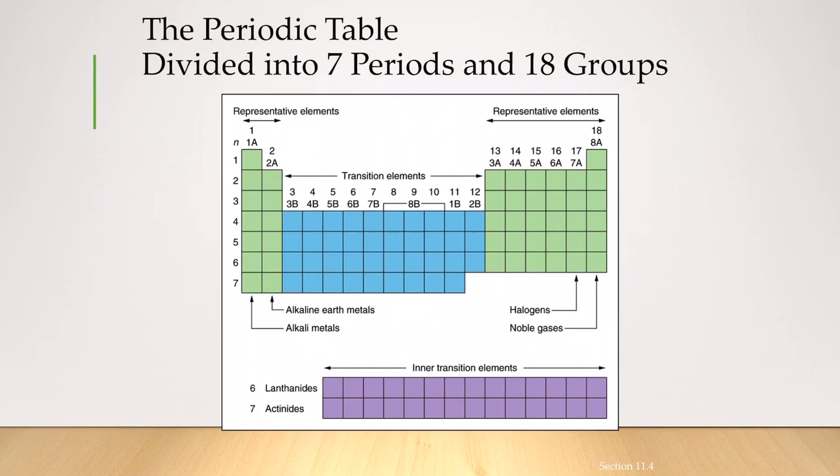And there is a reason why the inner transition elements have 14 columns, whereas the transition elements have only 10 columns in it.